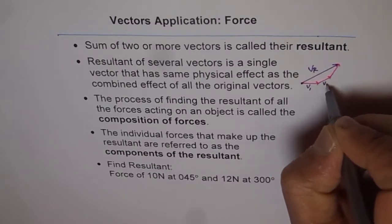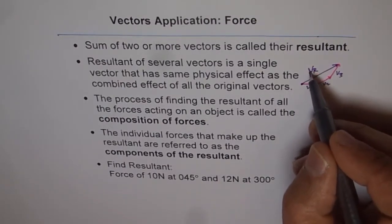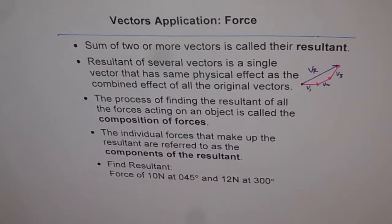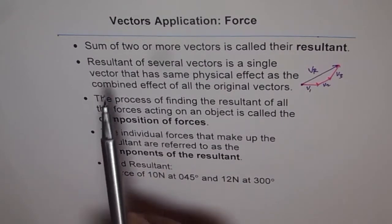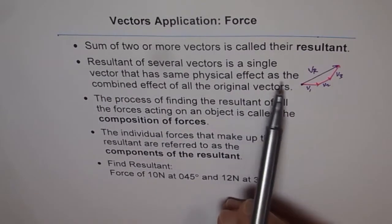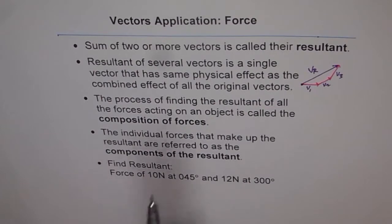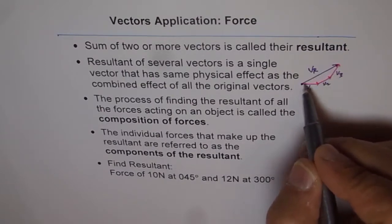So this is v1, v2, v3, and vr is the sum of all these vectors — that is the resultant vector. What we are trying to do here is recollect things learned about vectors and apply them to force, velocity, and other applications. The resultant of several vectors is a single vector with the same physical effect, meaning we can replace all original vectors with one vector. That is the beauty — it helps to solve problems.